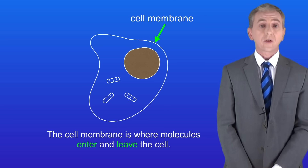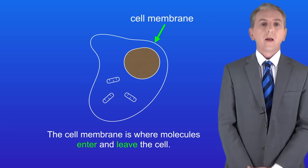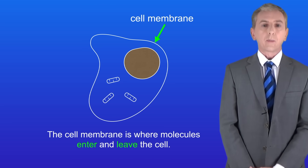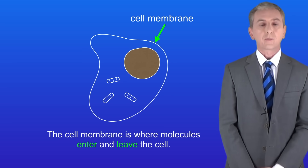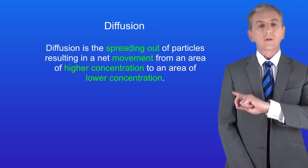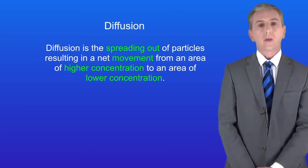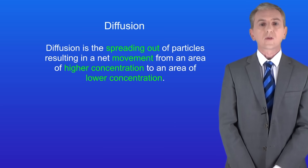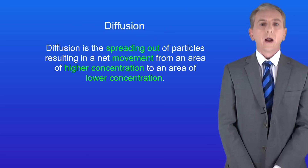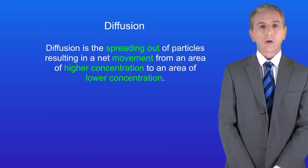We've already seen how cells are surrounded by a cell membrane. This is where molecules enter and leave the cell. One way that molecules can move in and out of cells is by diffusion, and that's what we're looking at in this video. Diffusion is the spreading out of particles resulting in a net movement from an area of higher concentration to an area of lower concentration, and the word net just means overall.